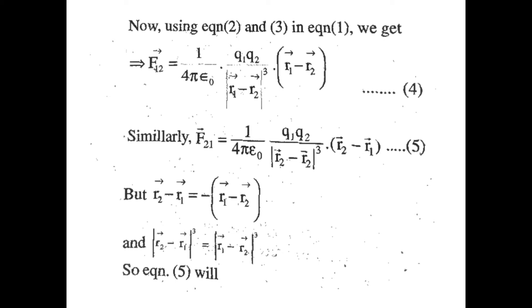Using Equation 2 in Equation 1, we get F12-vector = (1/4πε₀)·(q1·q2)/|r1-vector − r2-vector|³·(r1-vector − r2-vector). This becomes Equation 4.